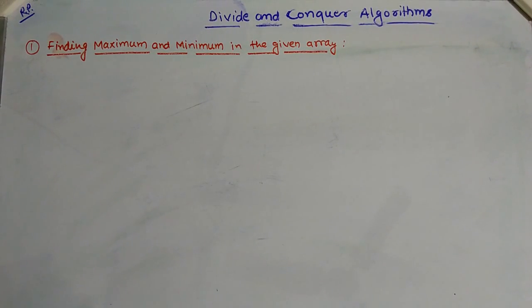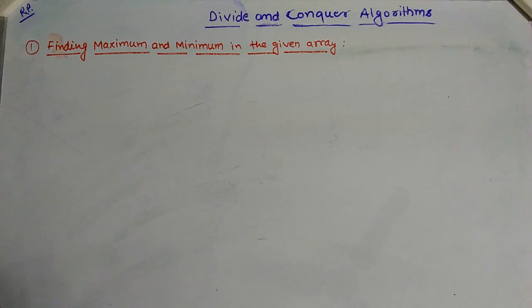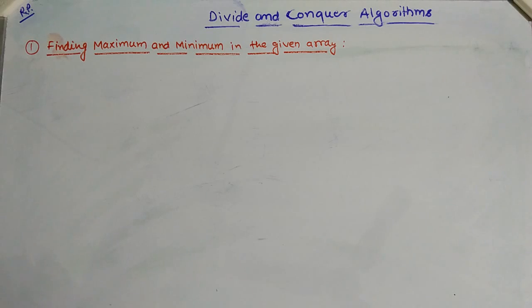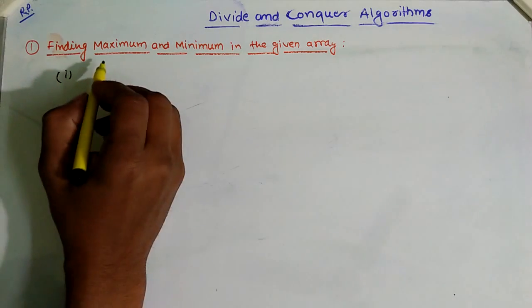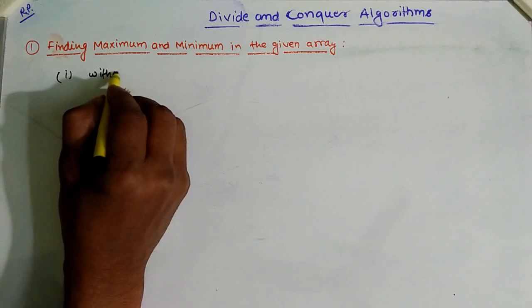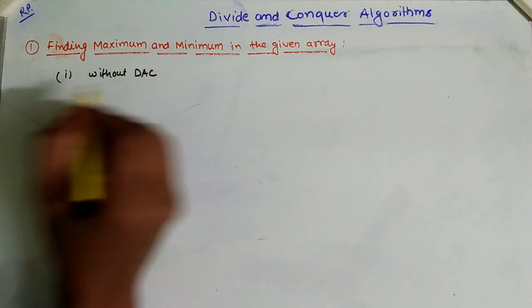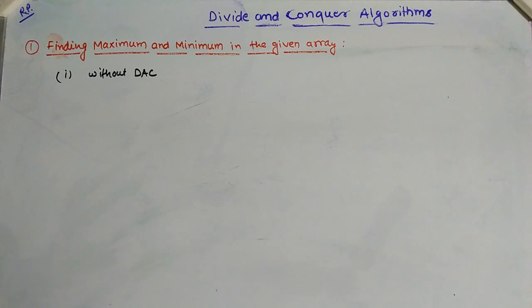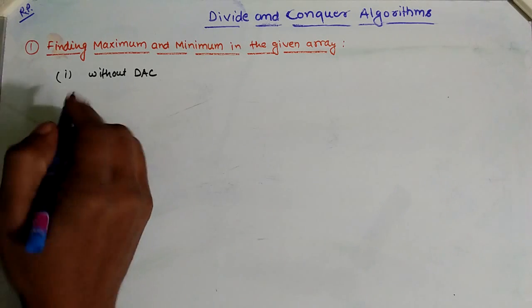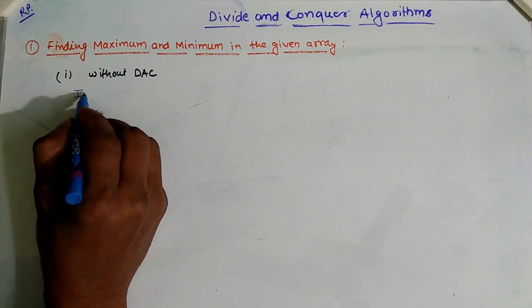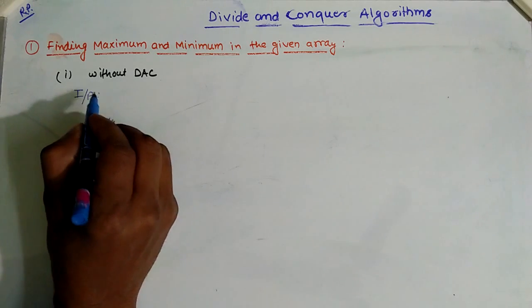Let's continue with the applications of divide and conquer algorithms. The first application is finding the maximum and minimum in a given array. We'll first try to solve this problem without the divide and conquer approach and analyze the time complexity if we solve this problem without recursion or without following the divide and conquer approach.